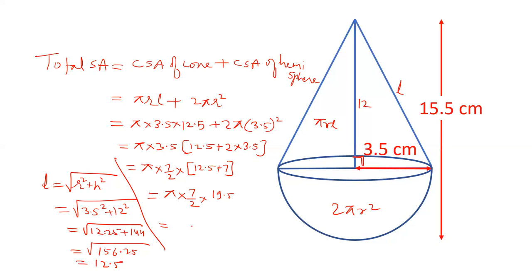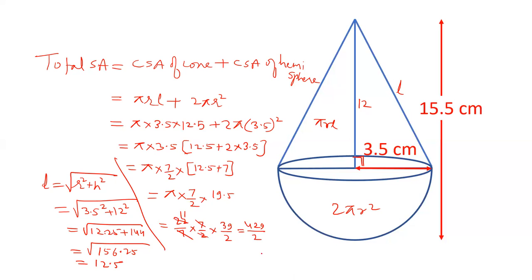अगर answer को pi में लिखना हो तो वो आ चुका है। 22/7 use करें तो 7/2 और 19.5 को 39/2 लिख सकते हैं — 7 cancel होता है, तो 11 into 39 = 440 minus 11 = 429 by 2, जो simplify होकर 214.5 आता है। यह curved surface area square centimeters में है, और volume cubic centimeters में।